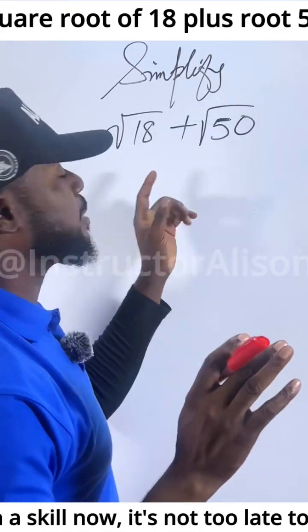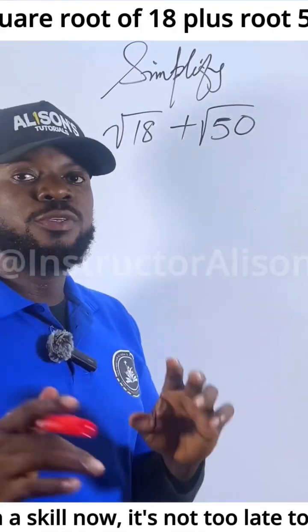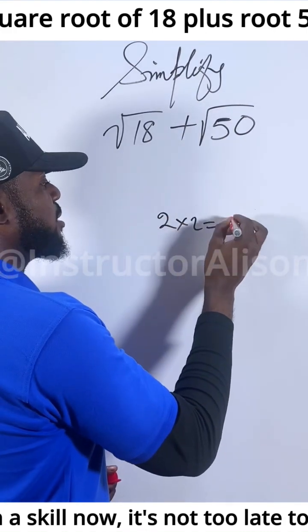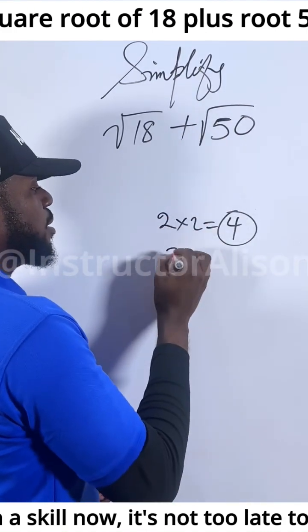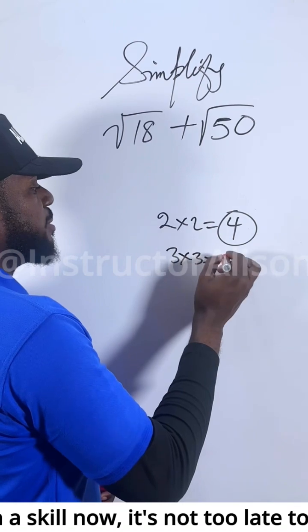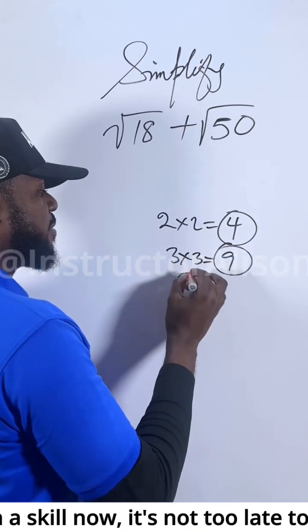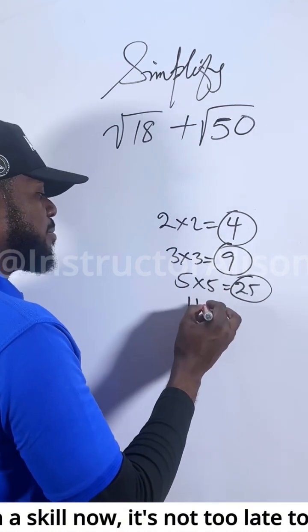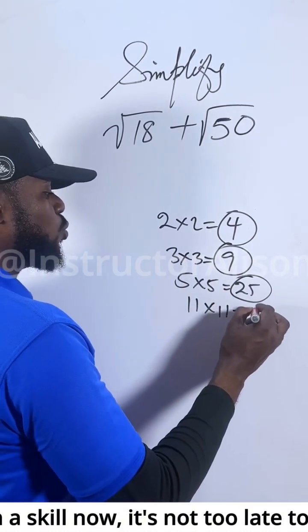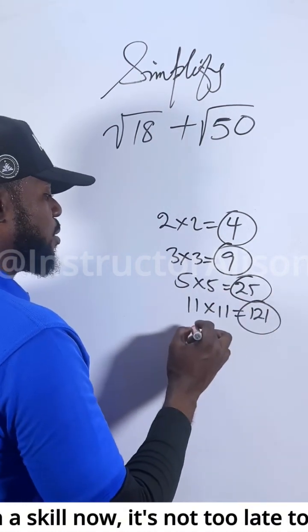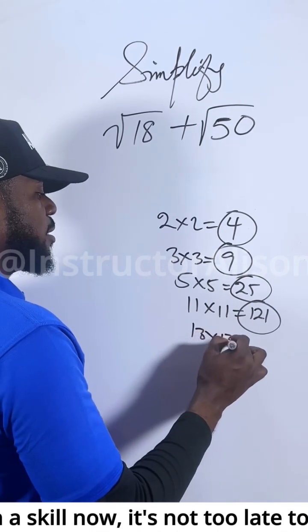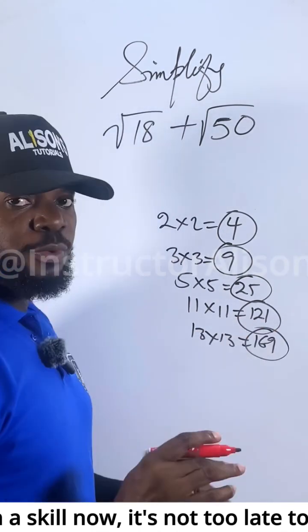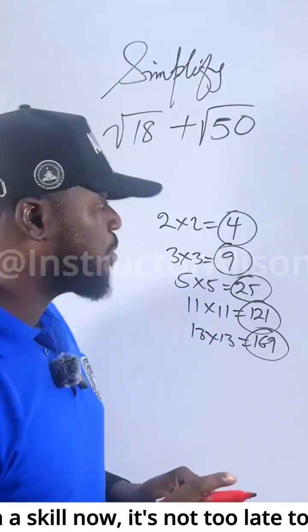There's no logic in solving this particular one — you just need to understand what we mean by perfect square. If I have 2 times 2, this gives me 4; 4 is a perfect square. 3 times 3 gives me 9; 9 is a perfect square. 5 times 5 gives me 25; 25 is a perfect square. 11 times 11 gives me 121; this is a perfect square. 13 times 13 gives me 169; this is a perfect square. I hope you understand the concept of perfect square now.